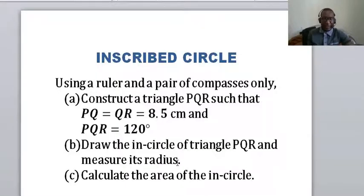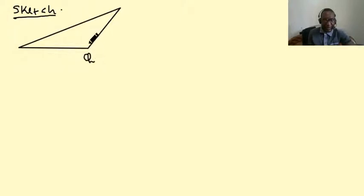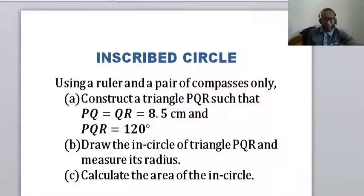First we need to draw a sketch before the actual diagram comes in. The angle Q should be 120 degrees. So this should be Q, and you can clearly see that this angle is beyond 90 degrees. And I have here my P, PQ is 8.5, QR is also 8.5. So a sketch is done.